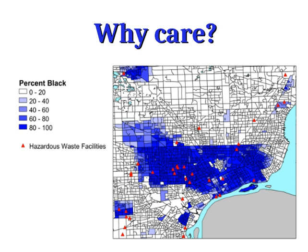Then we can ask, why care? Why does it matter that we have this residential segregation — that certain neighborhoods have a different racial composition than others? Well, certain neighborhoods are better to live in. We find in Detroit a clear example that environmental quality in predominantly Black neighborhoods is much worse than in predominantly white neighborhoods. Most of the hazardous waste facilities in Detroit are located in predominantly Black neighborhoods, with very few in predominantly white neighborhoods.